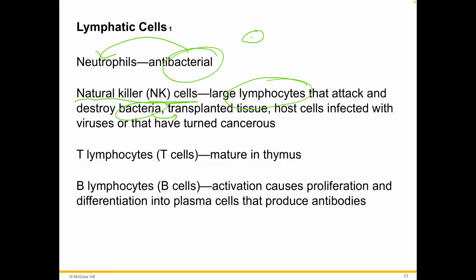NK cells also target host cells that are infected with viruses or that have turned cancerous — these are some of our front liners. We also have T cells and B cells. T cells are named because they mature in the thymus; they're like a sniper-type immune cell. B cells differentiate in the blood itself, and vaccines primarily target these cells because they remember what invaders look like.